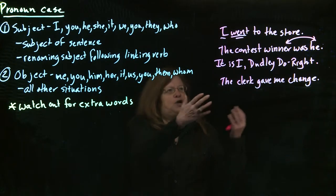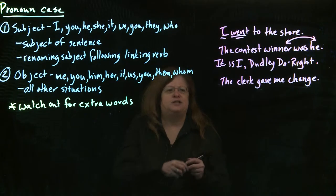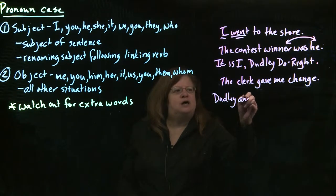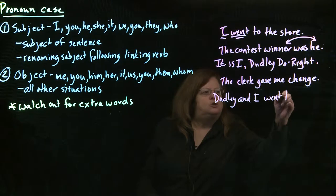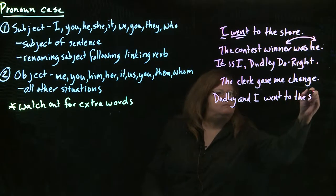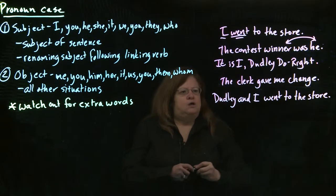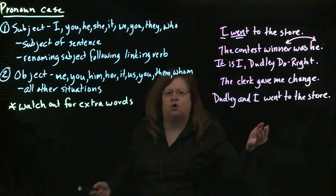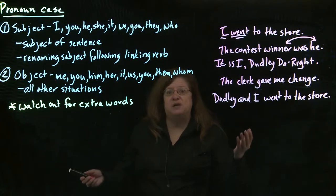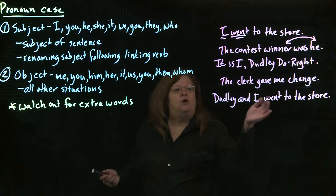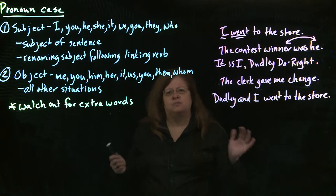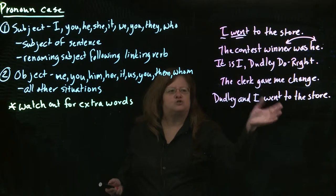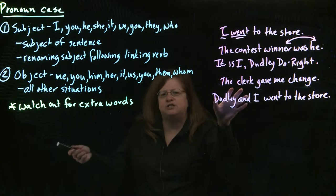For example, if we go back to when I went to the store, maybe I didn't go by myself — Dudley came with me. So I would say, 'Dudley and I went to the store.' In spoken English, you'll hear people say 'Dudley and me went to the store,' or 'me and Dudley went to the store.' How do you tell whether to use I or me? Well, get rid of the extra words temporarily. Instead of saying 'Dudley and I went to the store,' get rid of 'Dudley and' and see which pronoun fits.